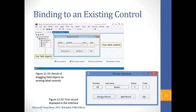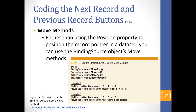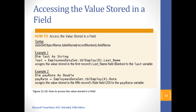The move methods are for building navigation. For a previous button, you bind it to BindingSource.MovePrevious, which moves to the previous record. For a next button, bind it to MoveNext. You can also add buttons for MoveFirst and MoveLast, and bind them to those methods — they'll take you to the first and last records respectively.